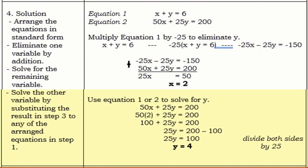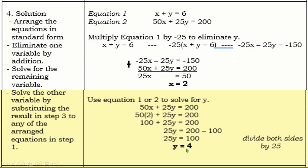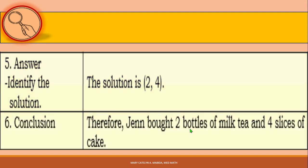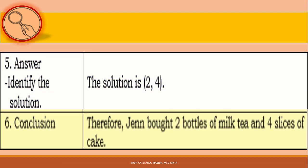Now let us solve for the other variable by substituting X equals 2 into one of the arranged equations. Using equation 2: 50 times 2 plus 25Y is equal to 200. That gives 100 plus 25Y is equal to 200, so 25Y is equal to 100, and Y is equal to 4. Therefore, the solution is (2, 4), and Jen bought 2 bottles of milk tea and 4 slices of cake.